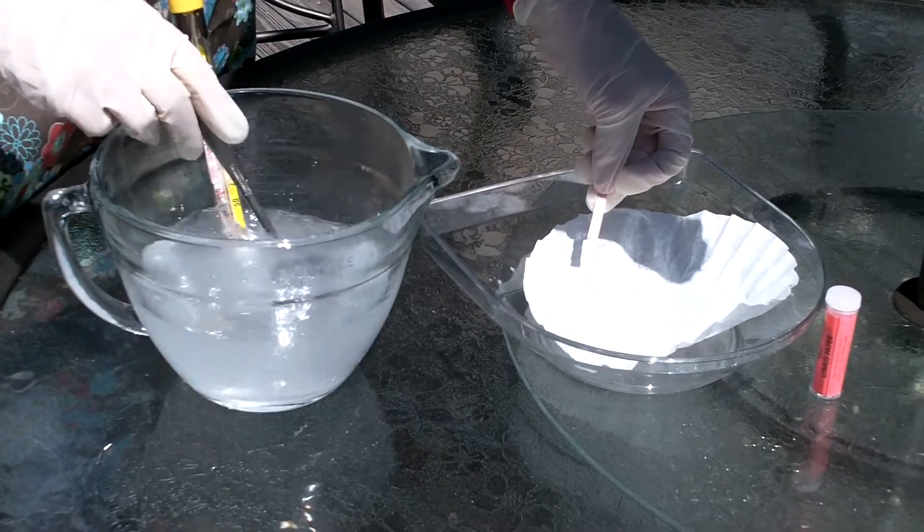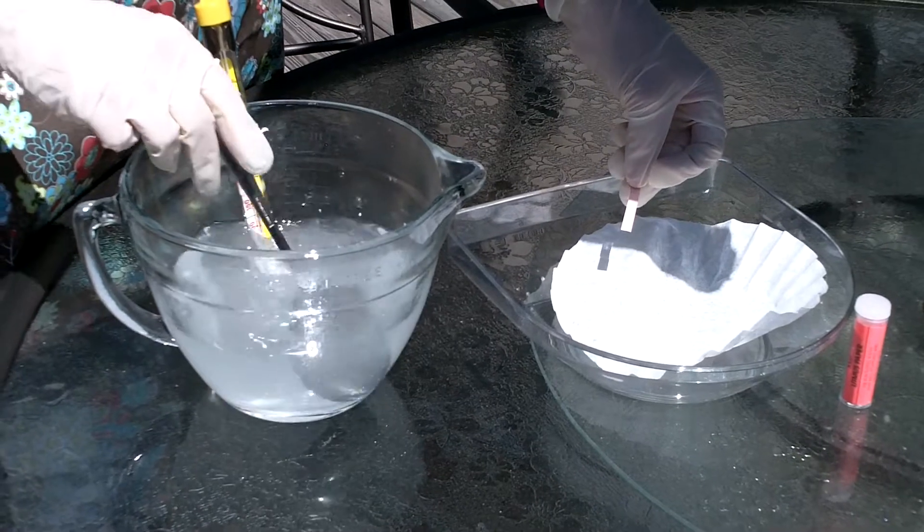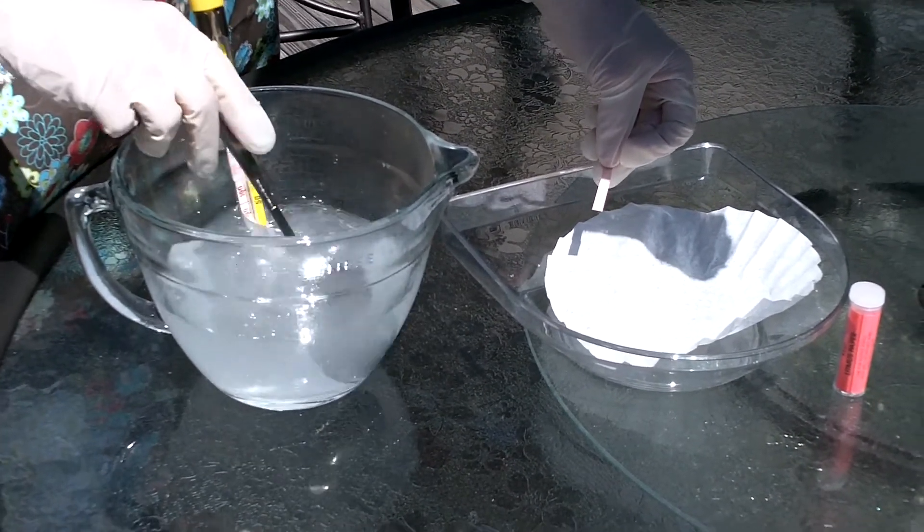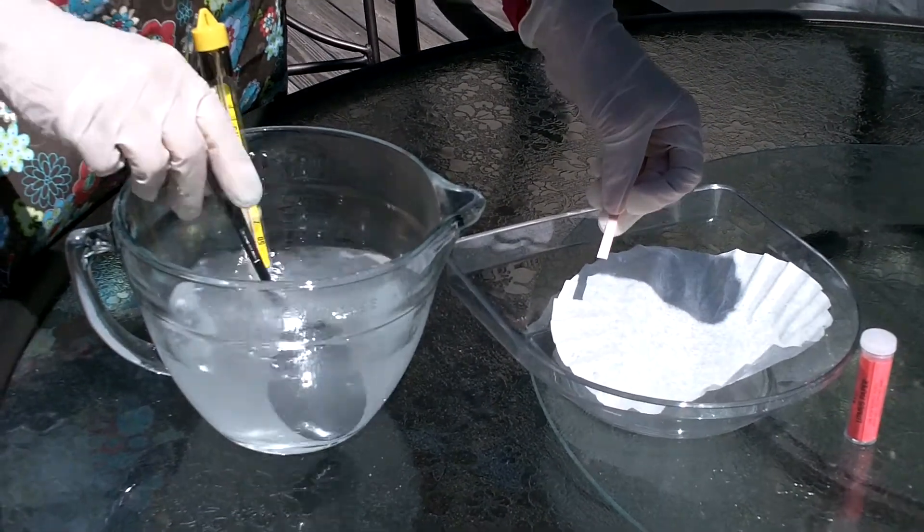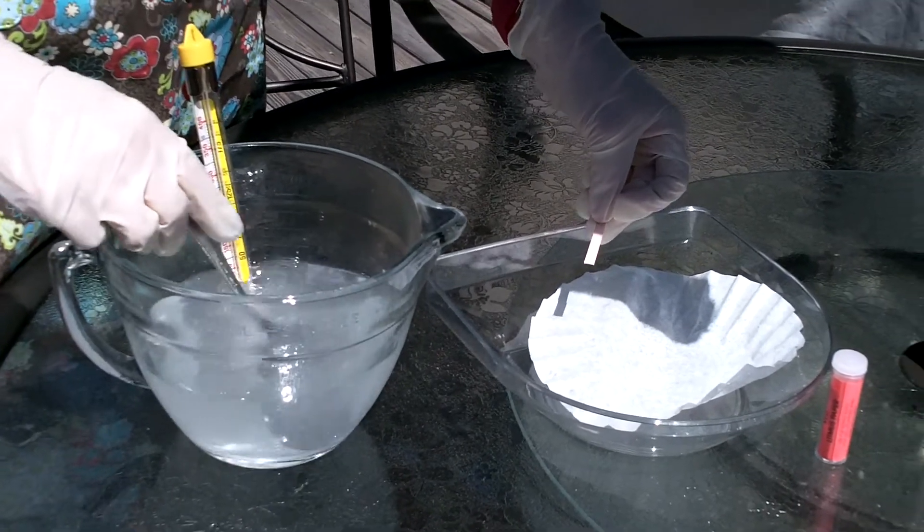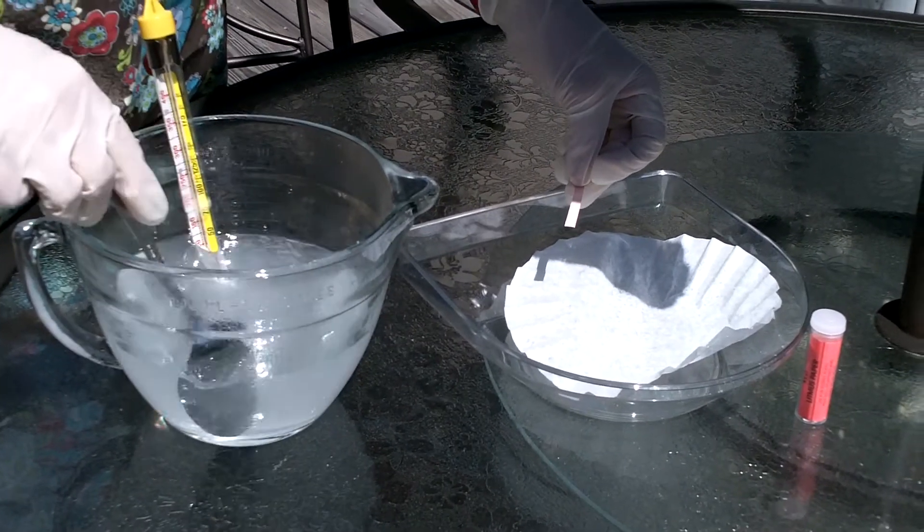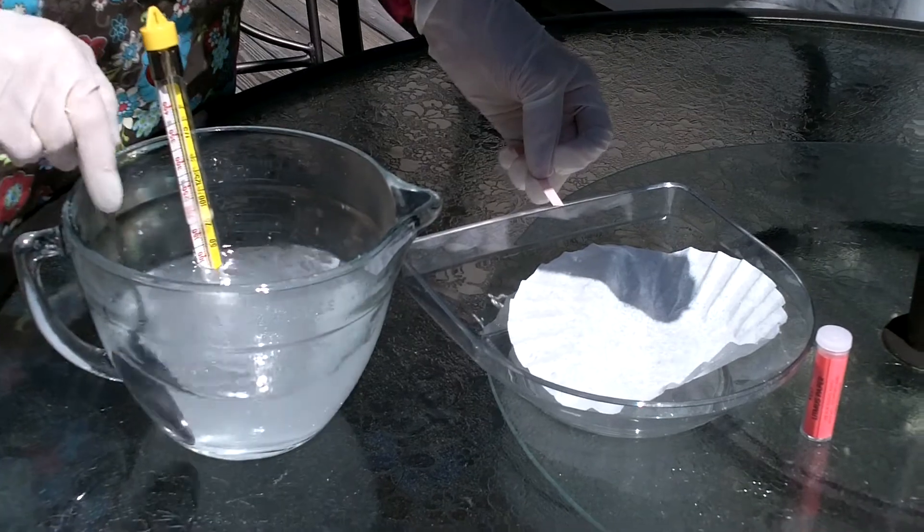As you can see, the solution is starting to become clear and that happens when all of the sodium hydroxide is dissolved. We have a piece of red litmus paper so that we can take a measure of the pH. As we've said, this is sodium hydroxide, so that's a base, and we can prove that by testing it on this pH strip.